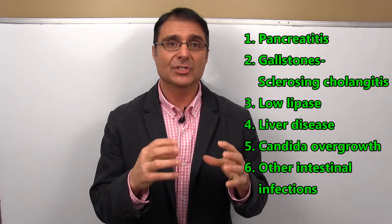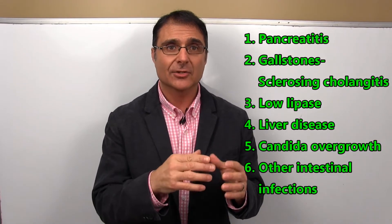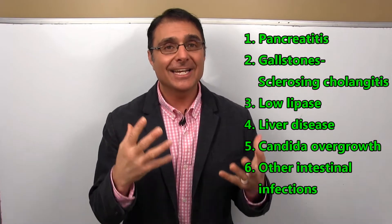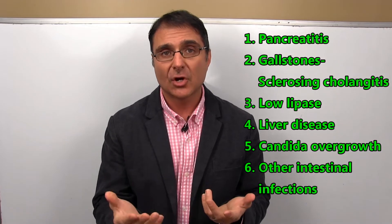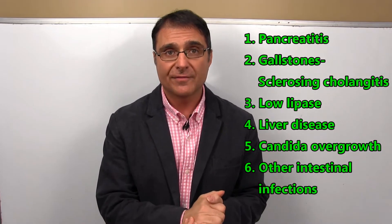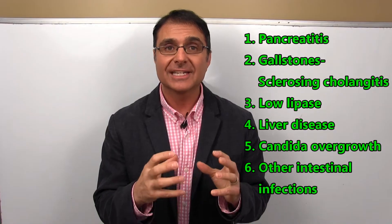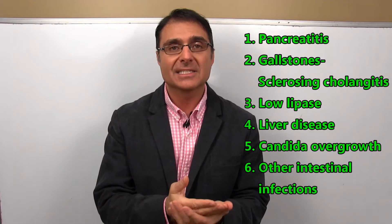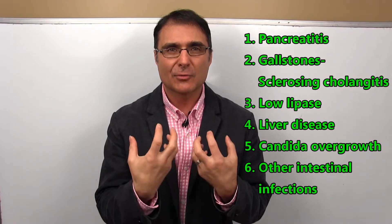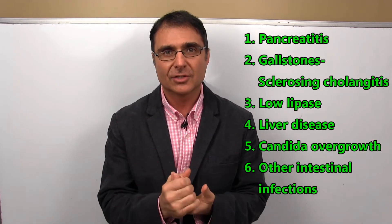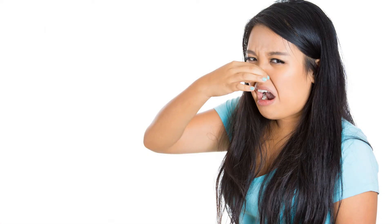Number six is other intestinal infections like H. pylori infection, which is a spiral-shaped bacteria that screws into the lining of the stomach and interferes with your ability to break down your food. Others include parasitic infections like Giardia and various mold infections. These infections stop your body's ability to break down fats, and they produce a very rancid smell in your stool — you can just tell something is clearly not right.